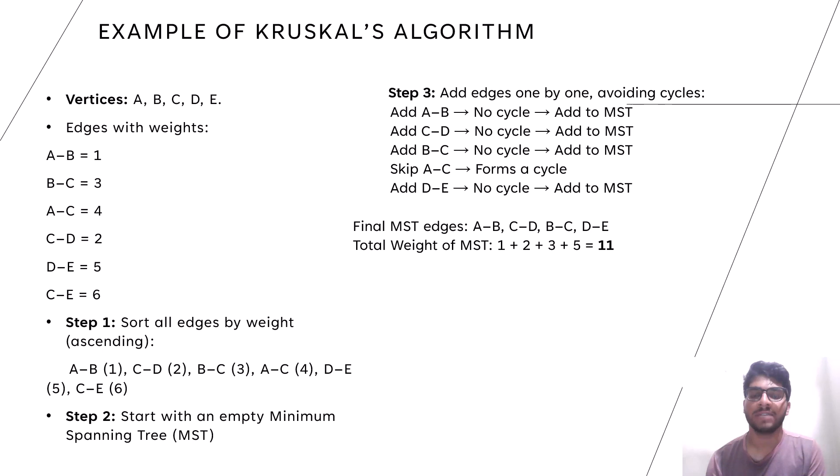For example, here we add AB, CD, BC and DE to the MST because they have no cycle and we skip AC which forms a cycle. The final MST edges are AB, CD, BC and DE. The total weight of MST is 11.